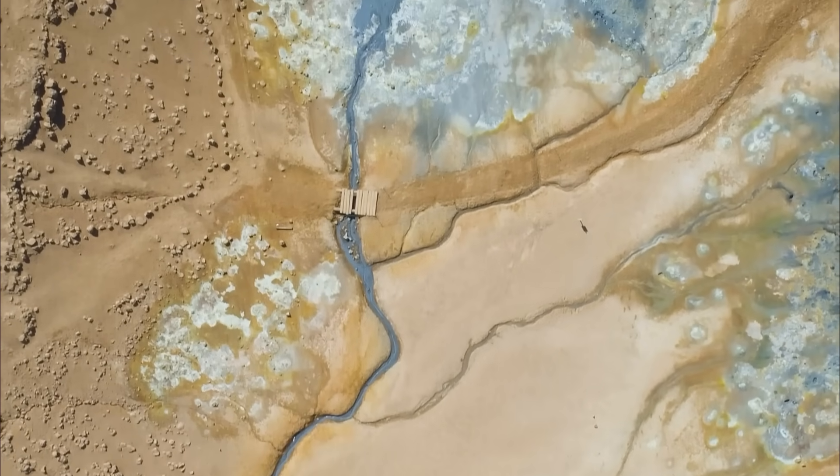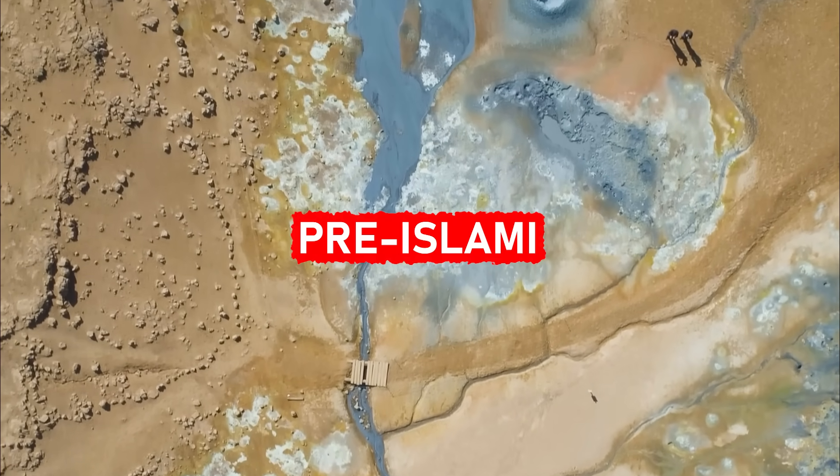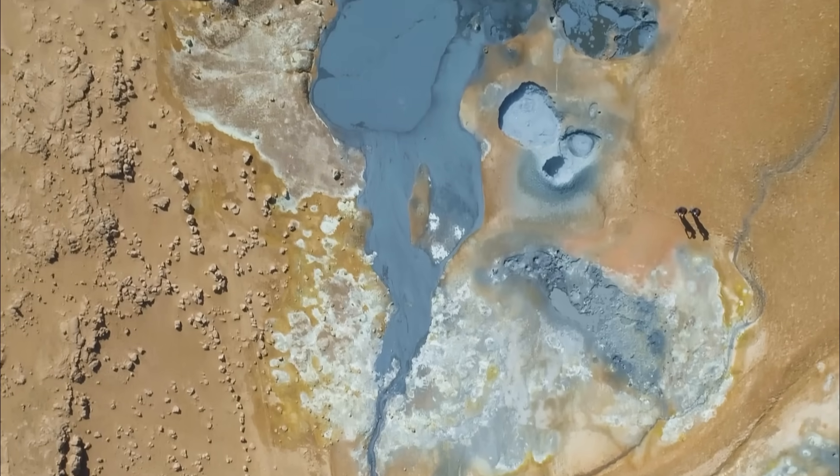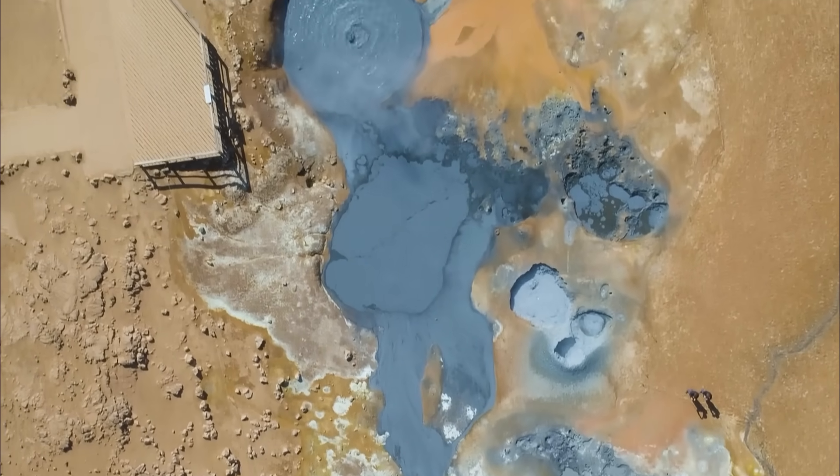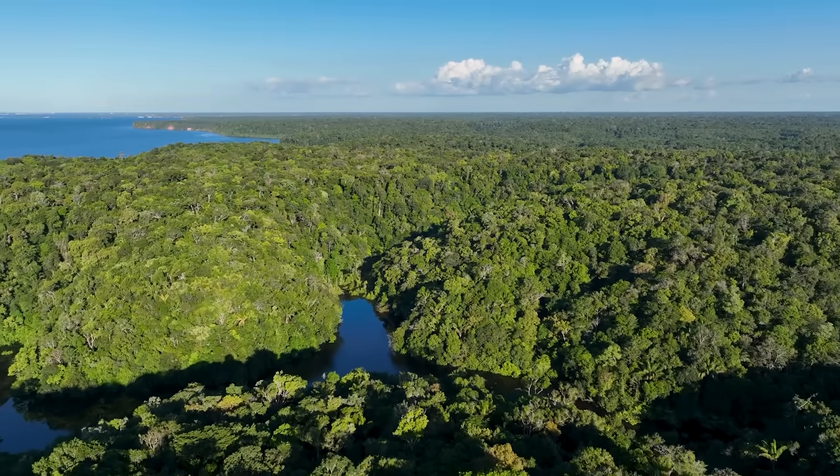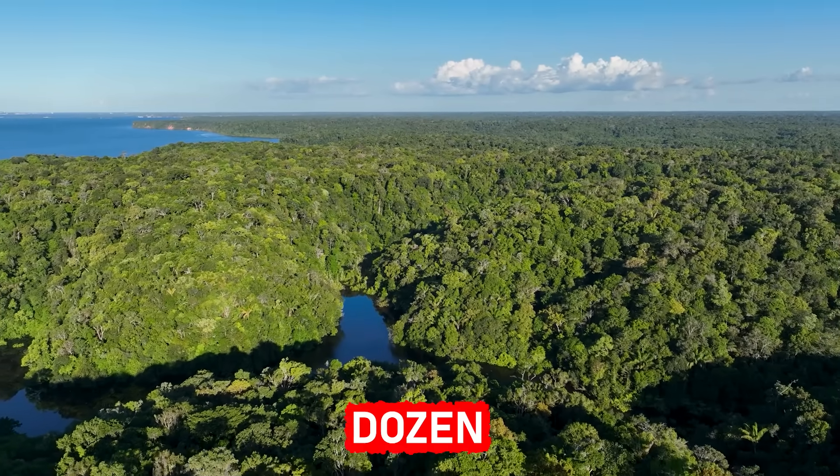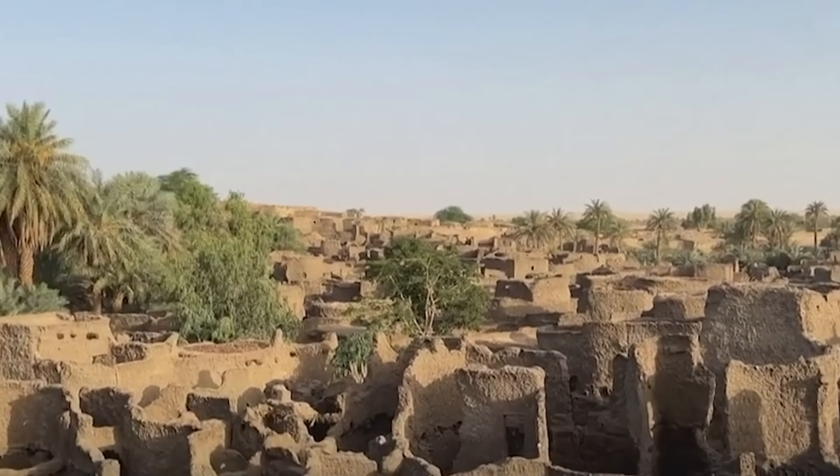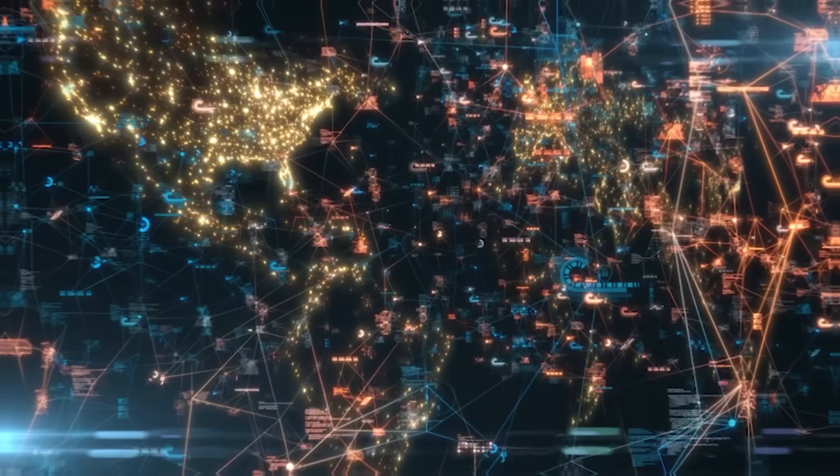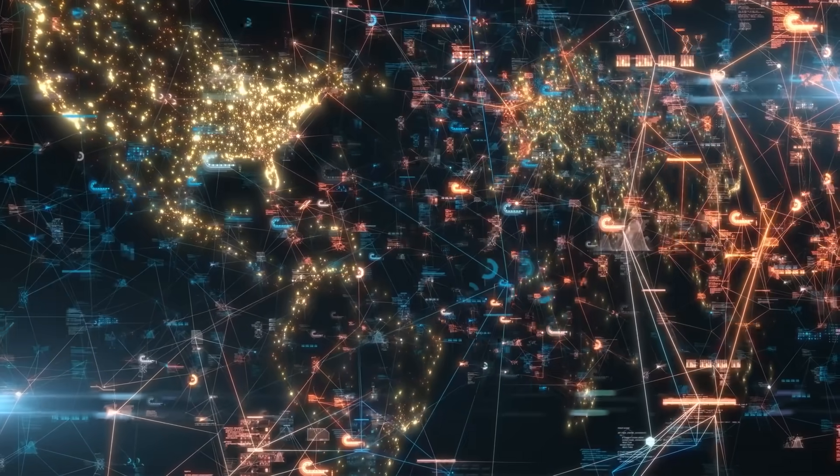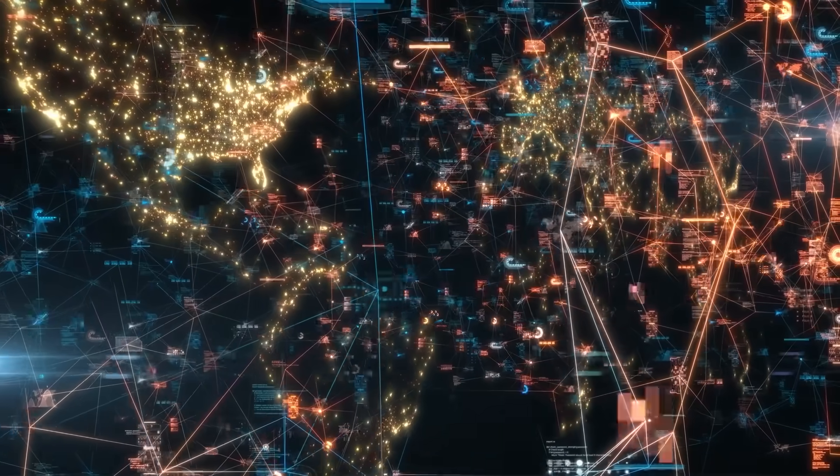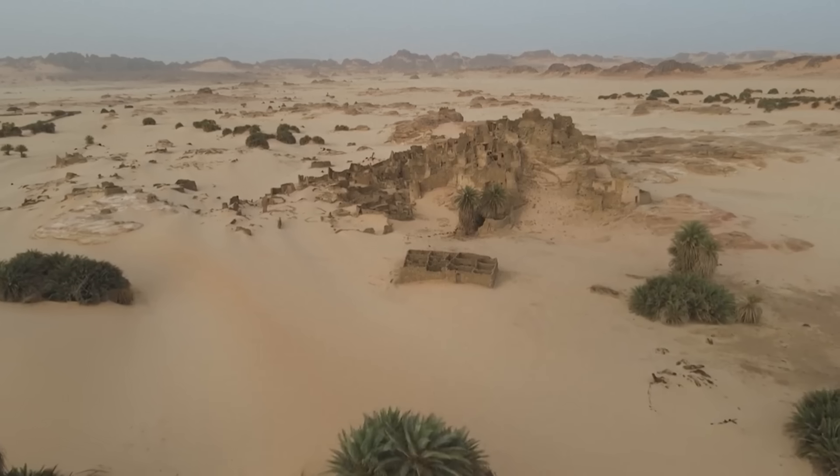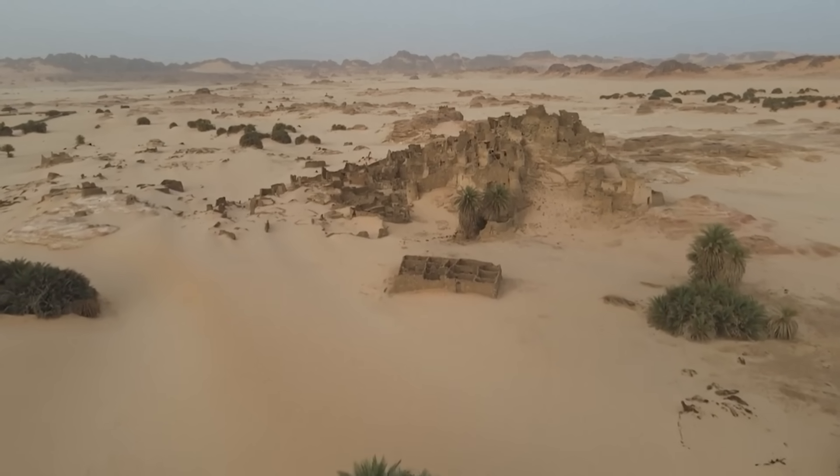A study in Nature Human Behavior revealed pre-Islamic caravan cities hidden beneath the sands of Saudi Arabia. Another, in Archaeological Prospection, uncovered dozens of lost Amazonian villages buried under thick rainforest. These discoveries are reshaping what we know about early civilizations. With AI's help, deserts and jungles are turning into digital maps of the past, revealing history that's been hidden for thousands of years.